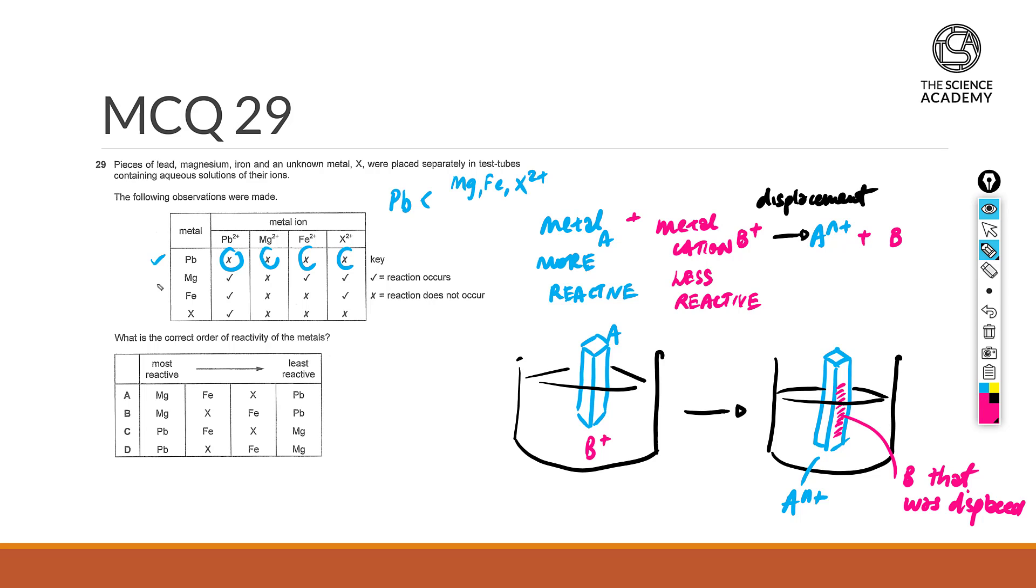Now, in the second, we're going to have magnesium placed within. We do see that magnesium is able to cause Pb2+ to have a reaction occurring, suggesting that magnesium is more reactive than Pb, a reaction for Fe2+, as well as a reaction for X2+. So it tells me that magnesium is more reactive than lead, iron, as well as X itself.